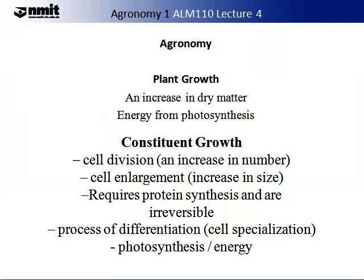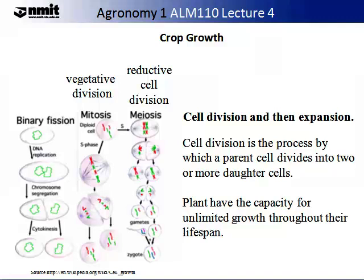Constituent growth involves a change in cell division — an increase in number. Cell enlargement occurs as cells get larger during growth. This process requires protein synthesis and is typically irreversible. There is also a process of differentiation or cell specialisation — for example, a cell can become adapted to a photosynthetic function. There are two forms of cell division: vegetative and reproductive. Mitosis is the name for vegetative cell division, while meiosis is the name for reproductive cell division. There is a summary diagram on the slide demonstrating these two processes.